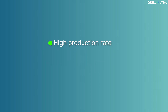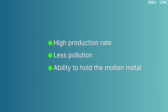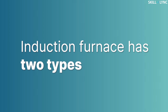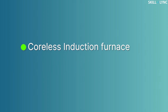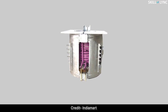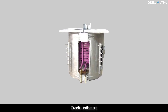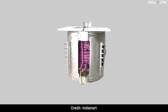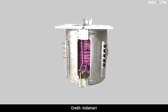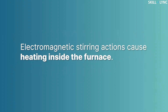This type of furnace is extensively used in industries due to its high production rate, less pollution generation, and ability to hold molten metal. The next type is the induction furnace, which has two types: the coreless induction furnace and the core or channel induction furnace. In the coreless induction furnace, a crucible is used which is surrounded by a water-cooled copper coil through which a high-frequency current is passed.